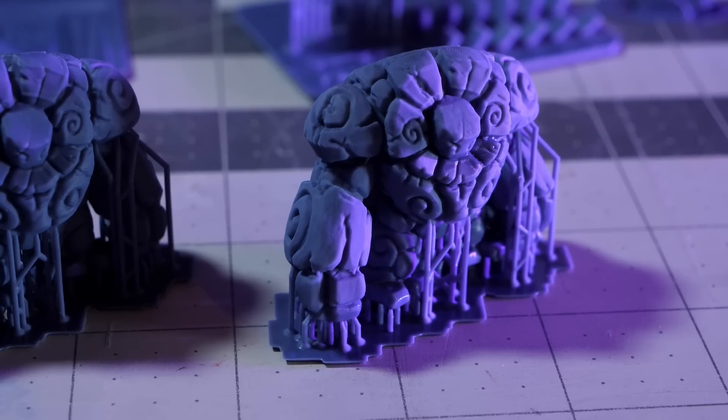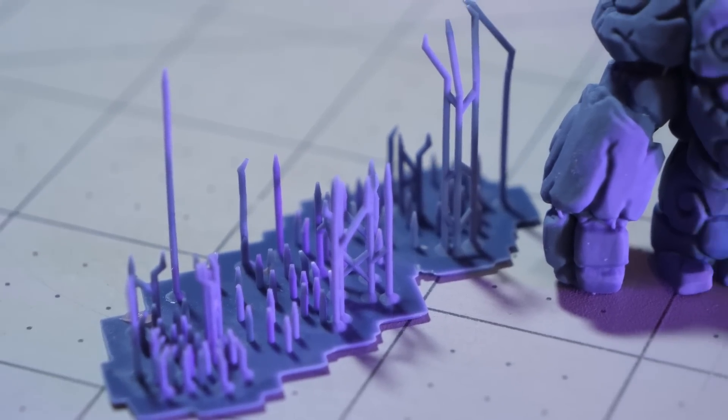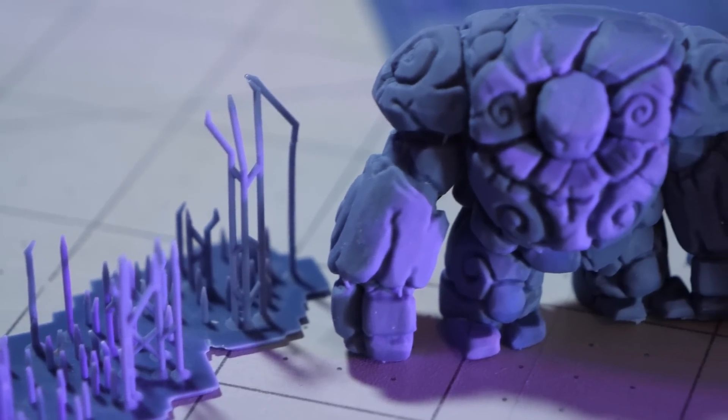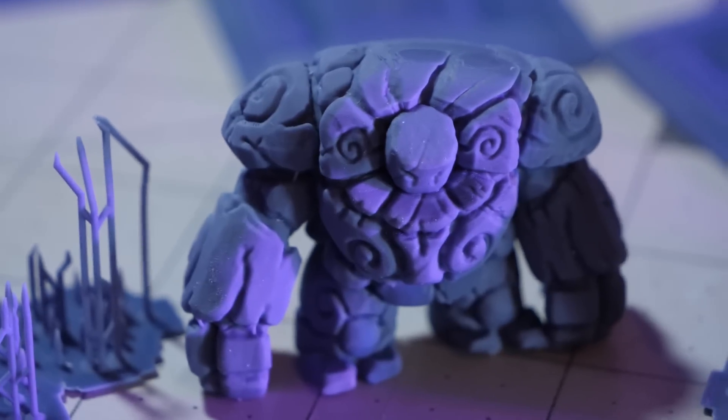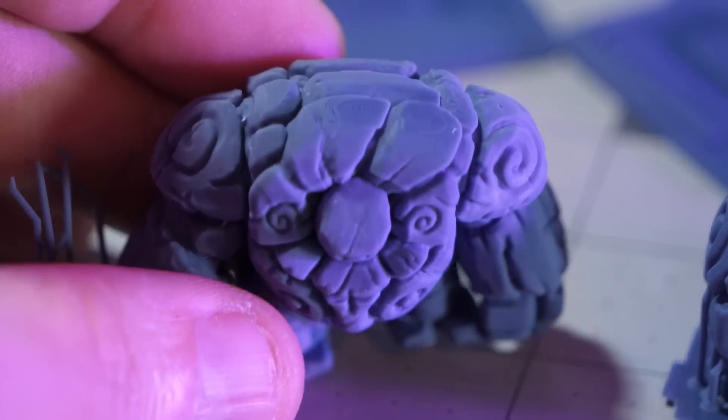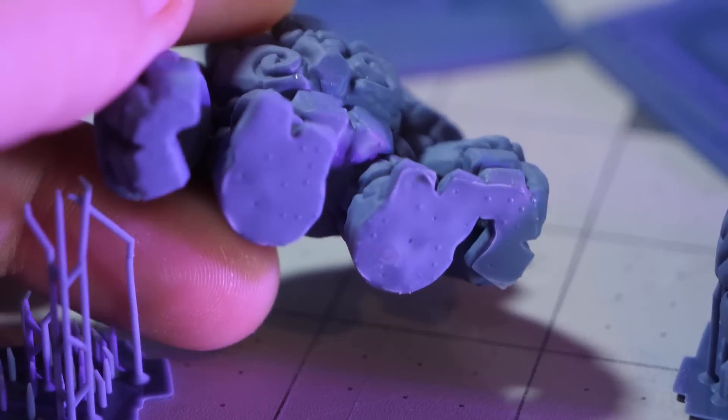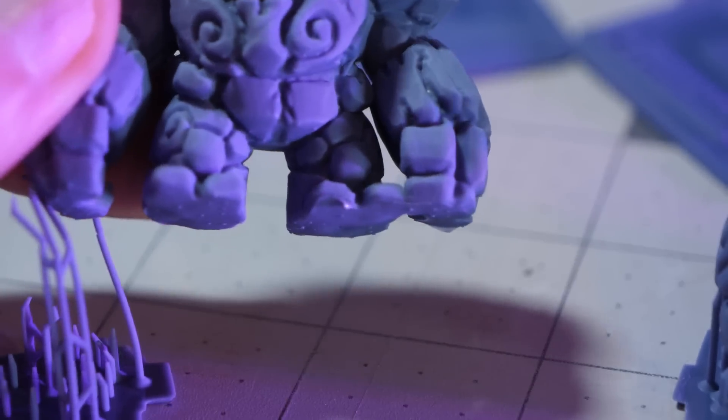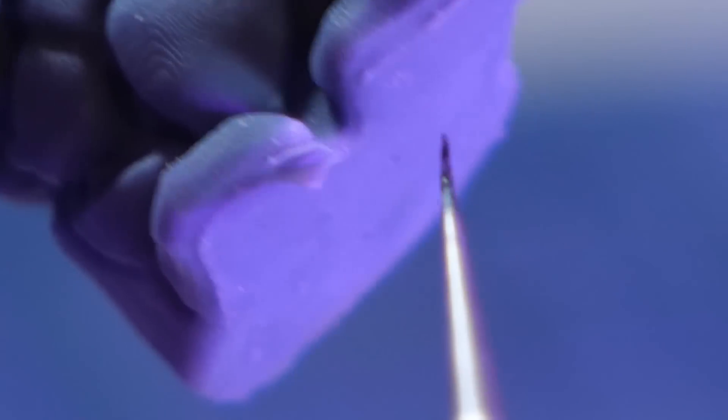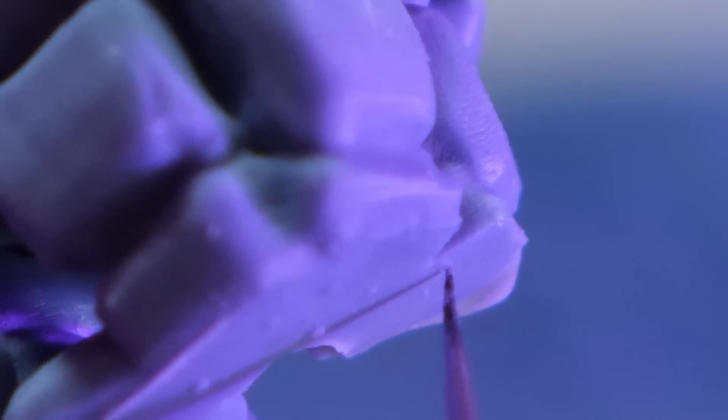The first one was a fail, and that was expected. I printed these solid, in order to give the resin print a bit more strain when lifting off the FEP film. With the first one, the supports failed during printing. The print was just hanging around, which resulted in a complete failure.